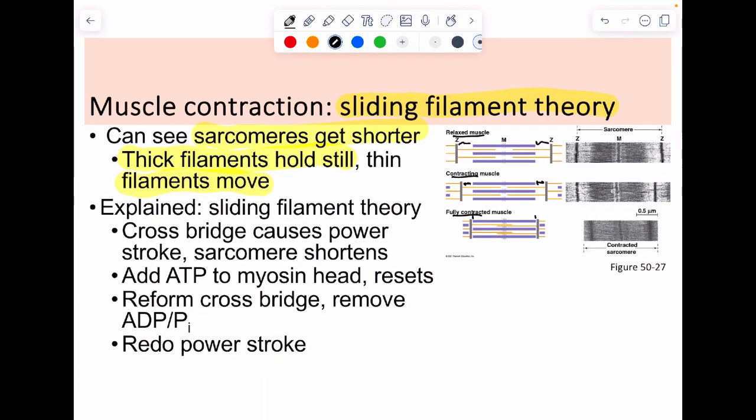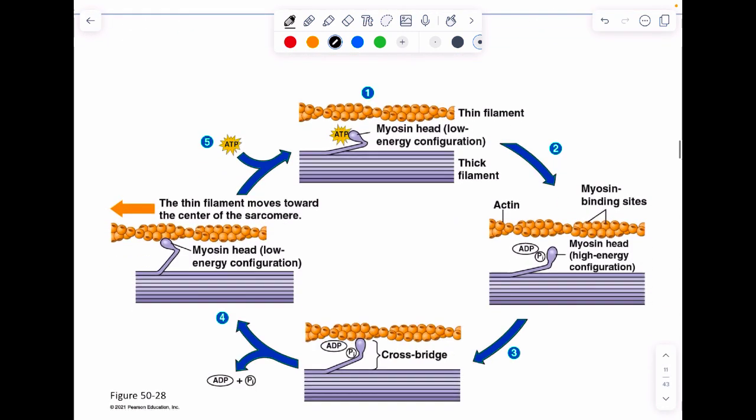We describe this in a few steps. First, when we cross bridge, thick and thin filaments interact—myosin and actin are interacting. This causes a power stroke, which is a contraction, and the sarcomere shortens. To let go and do this again, we add ATP to the myosin. To cause the release, we hydrolyze the ATP into ADP and phosphate. We can reform that cross bridge by removing the last bit of energy, then redo the power stroke.